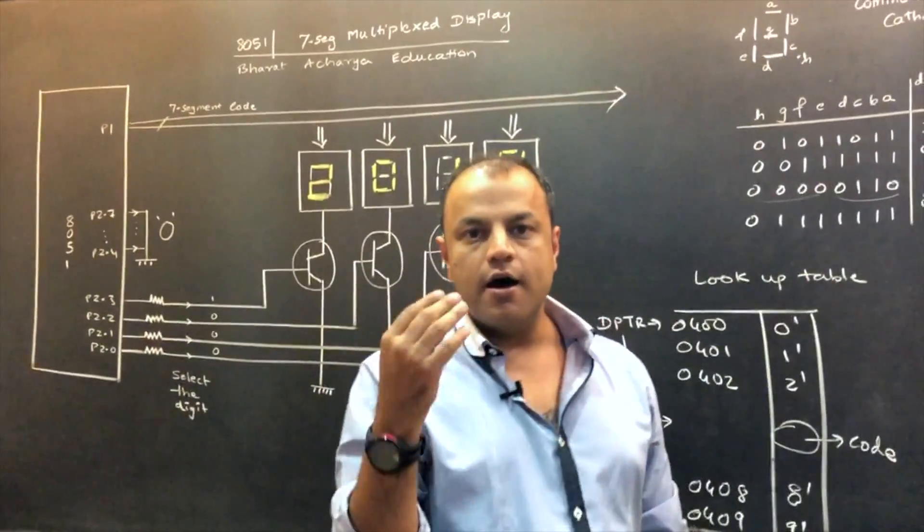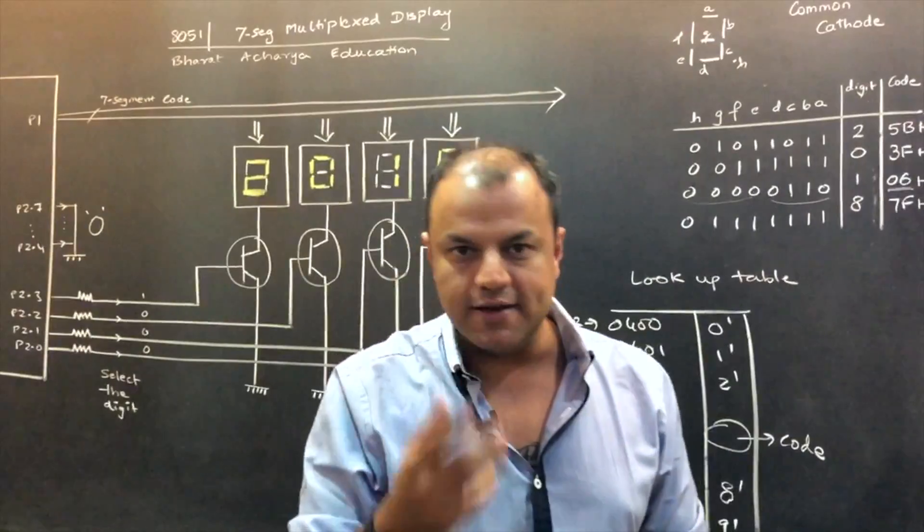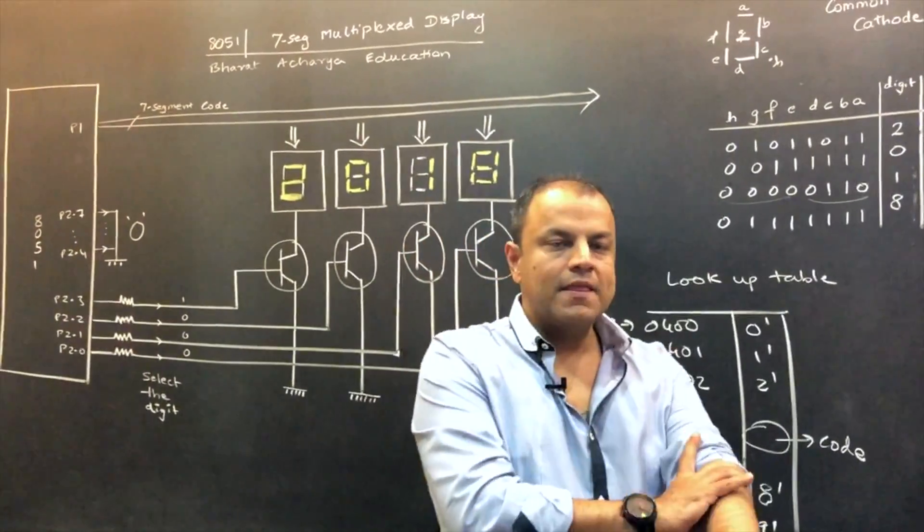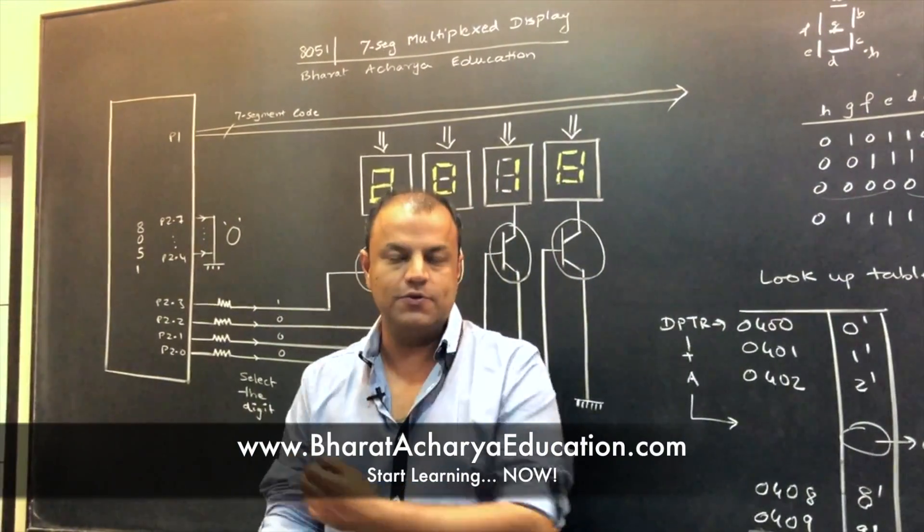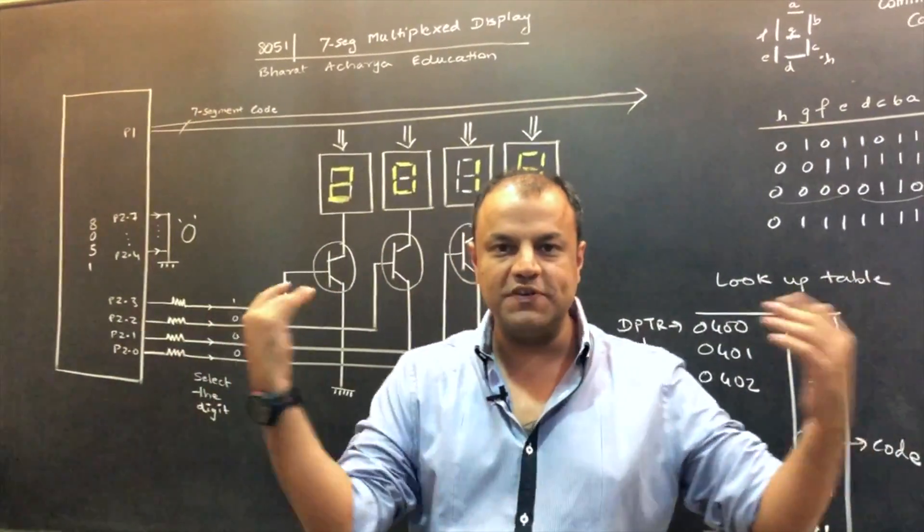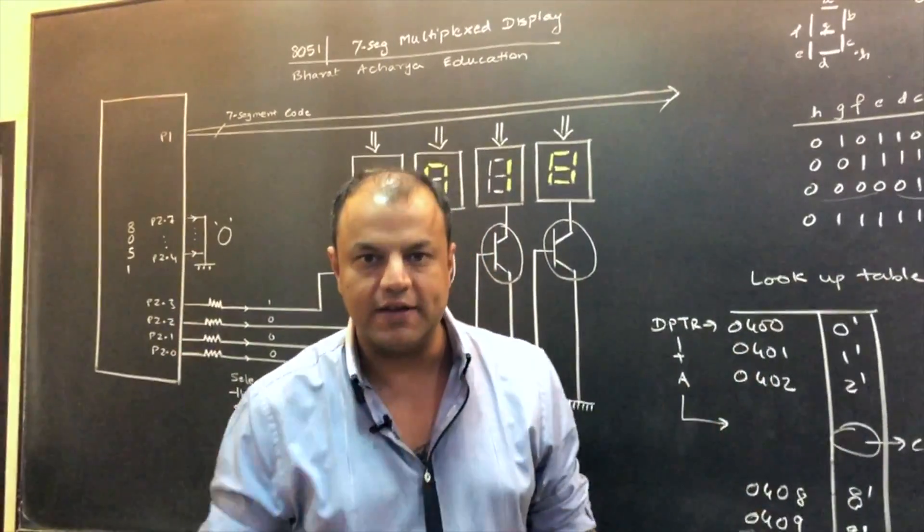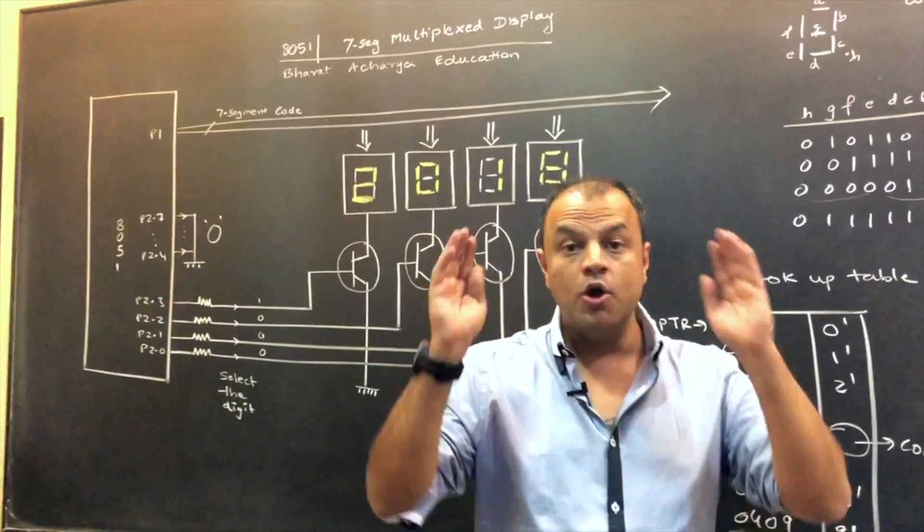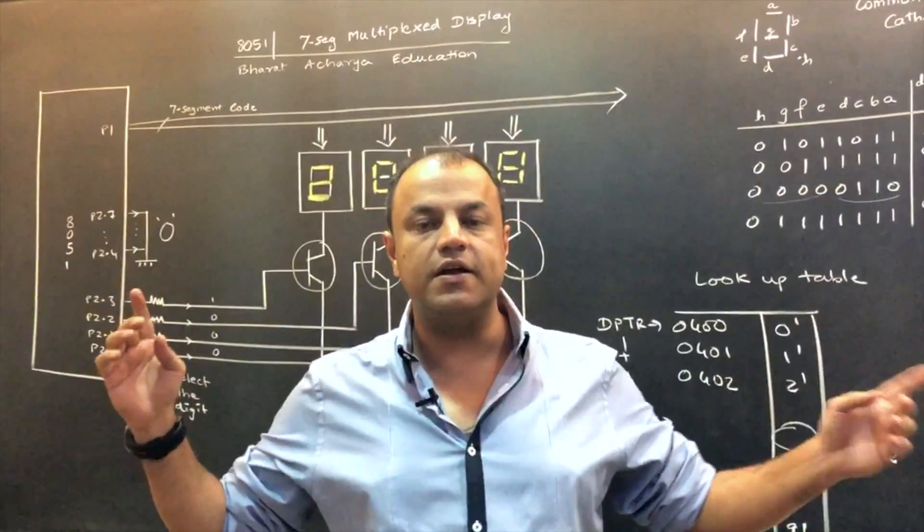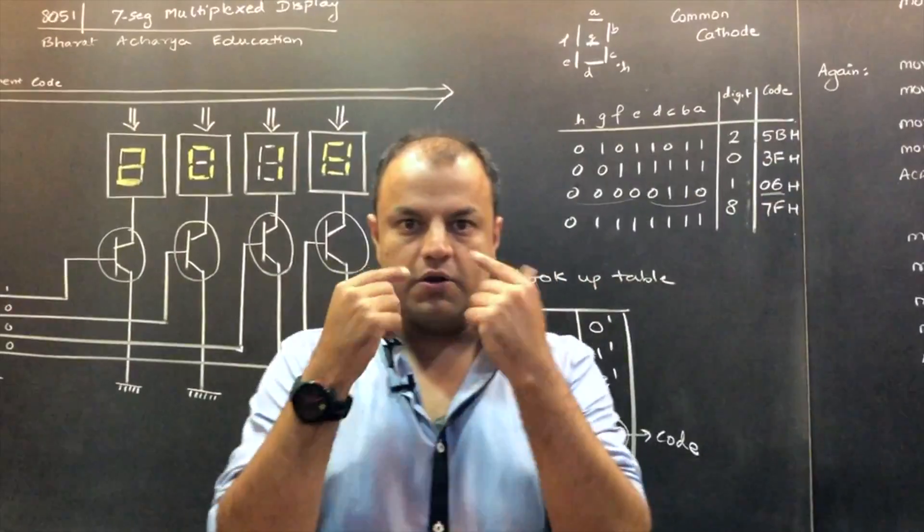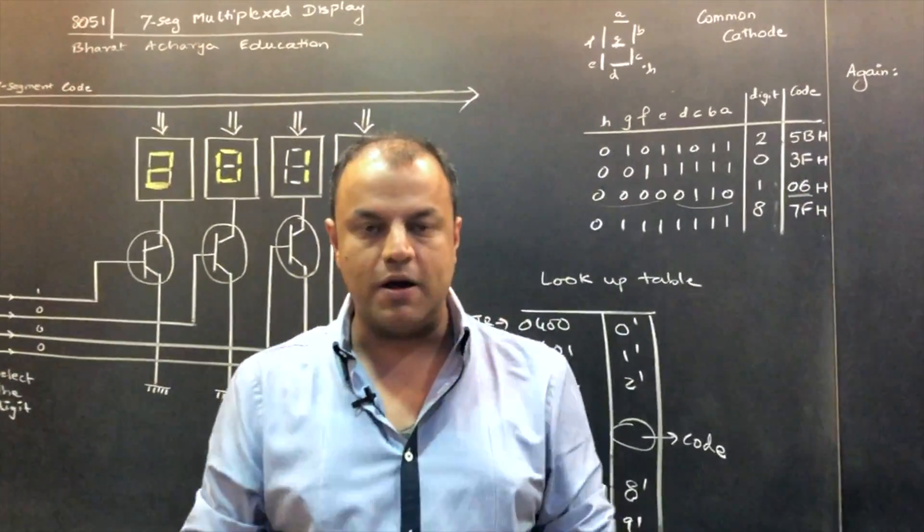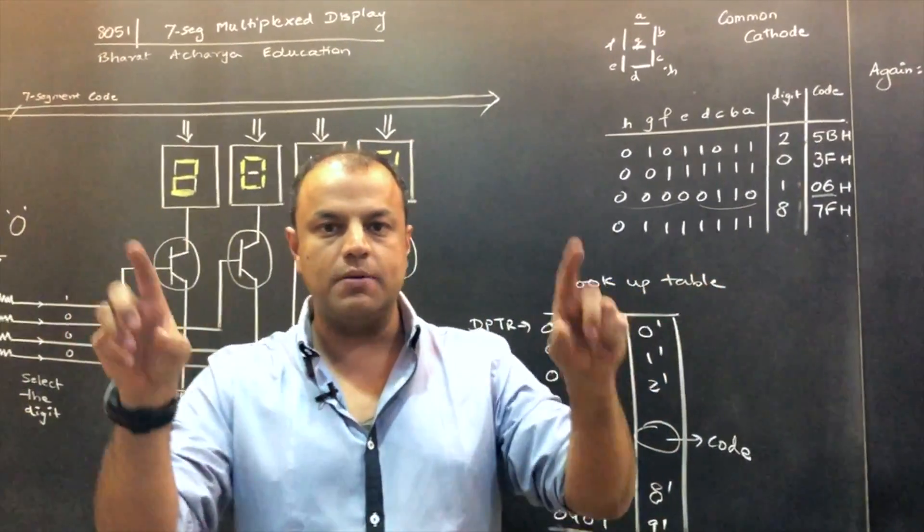So now how much time does your eye take? A human eye takes about 100 milliseconds to change the image. Now 100 milliseconds is a big window. I'm sure you know processors work in microseconds. They work in megahertz. So processor can finish this round within microseconds. It doesn't really need even one millisecond. Though we have a window of 100 milliseconds to come back and display 2. So what happens actually is just 2, 0, 1, 8 in a loop. But what a human being sees when you see it up front is 2018 put up together.